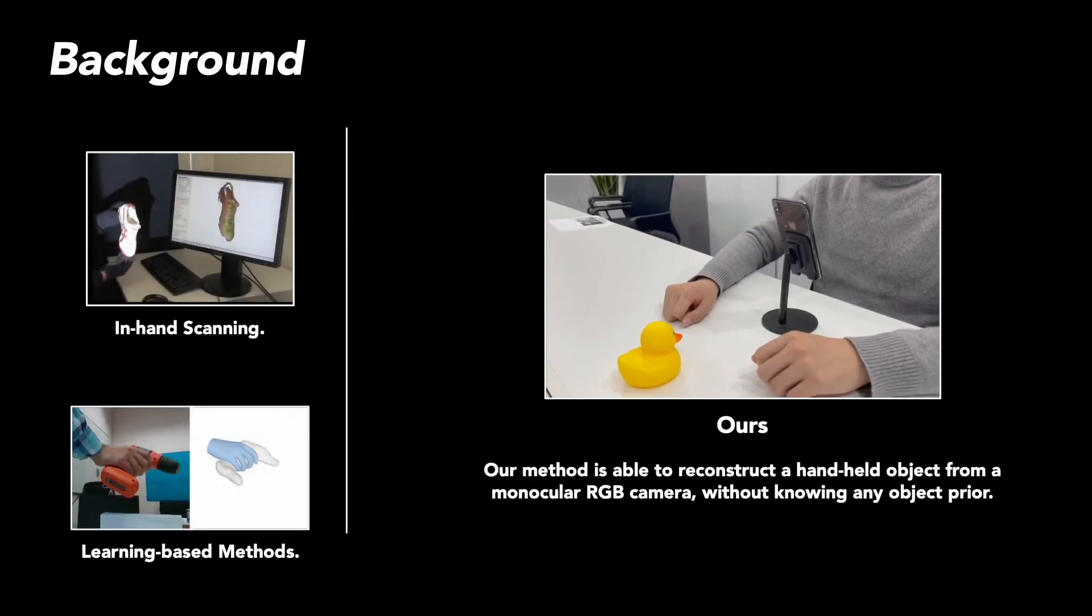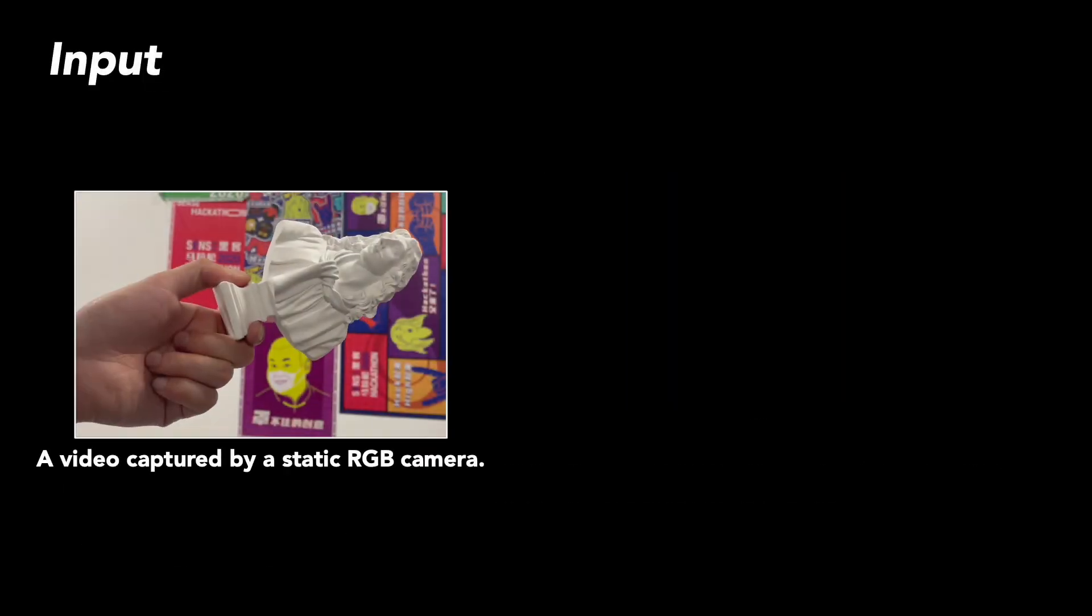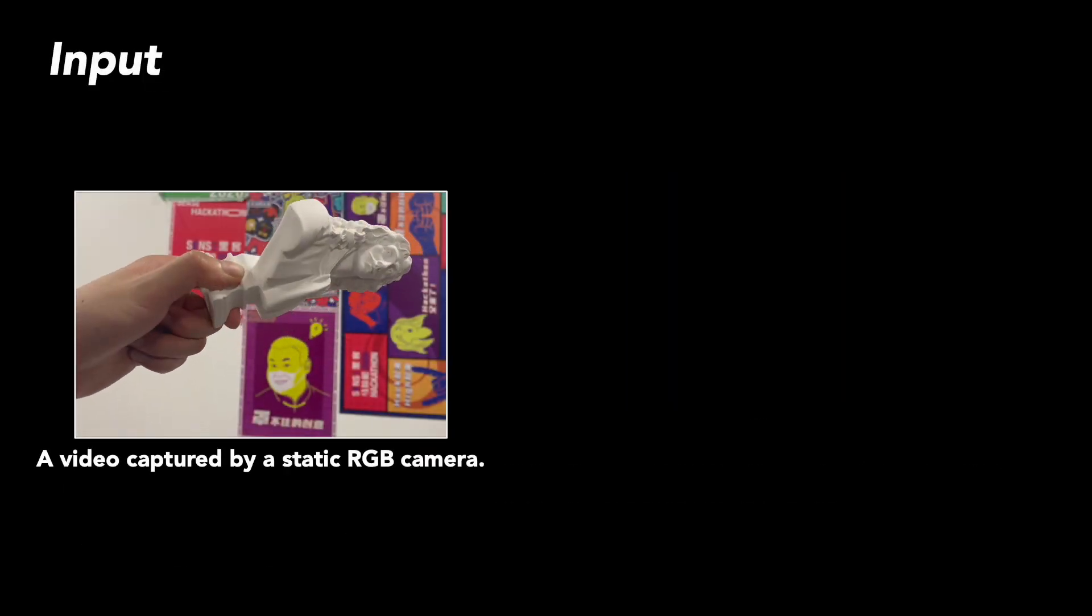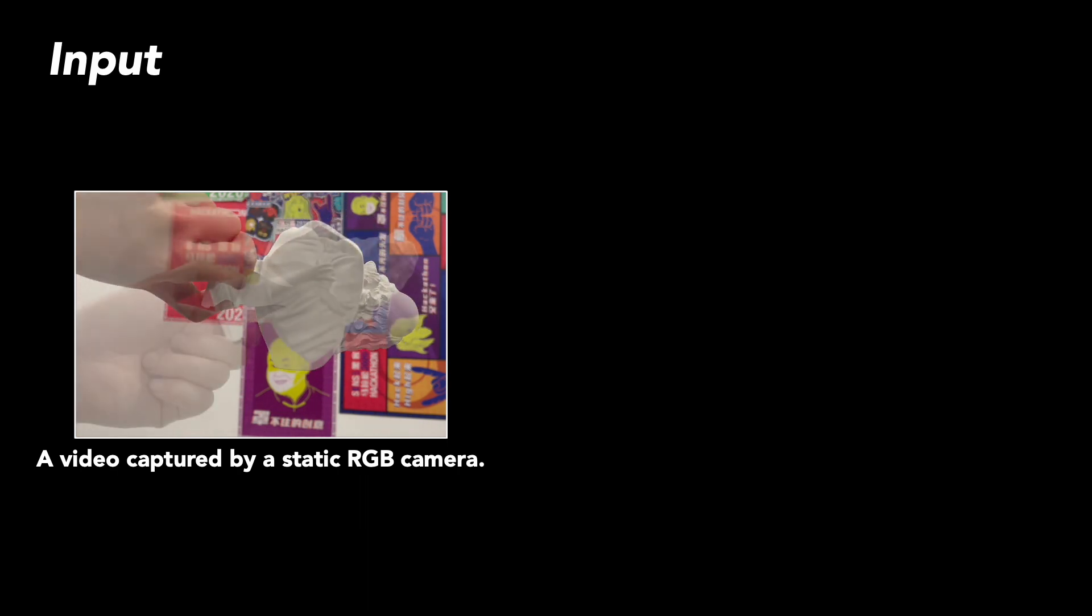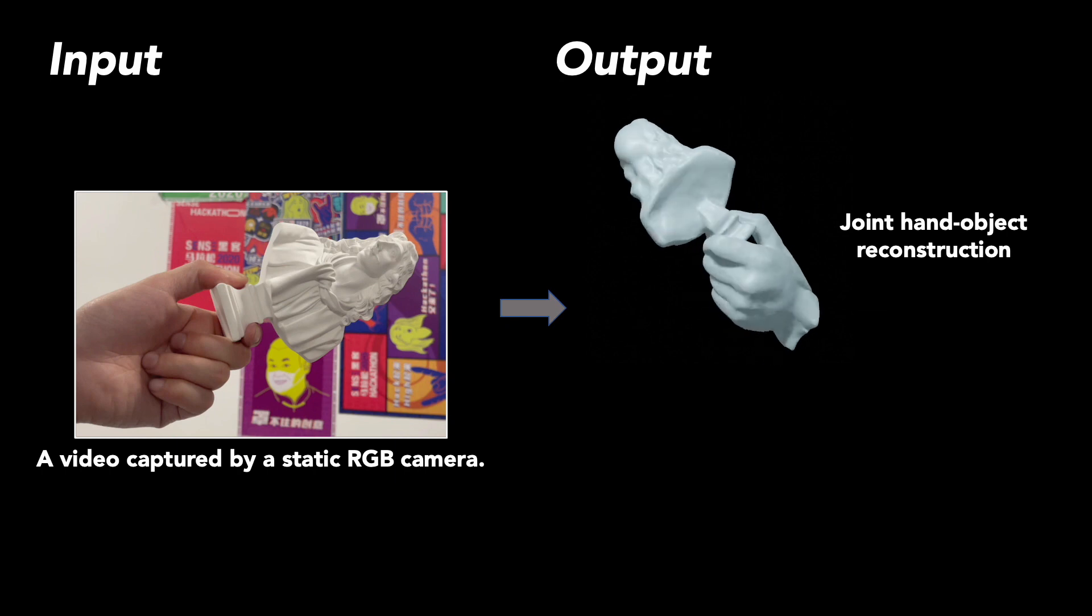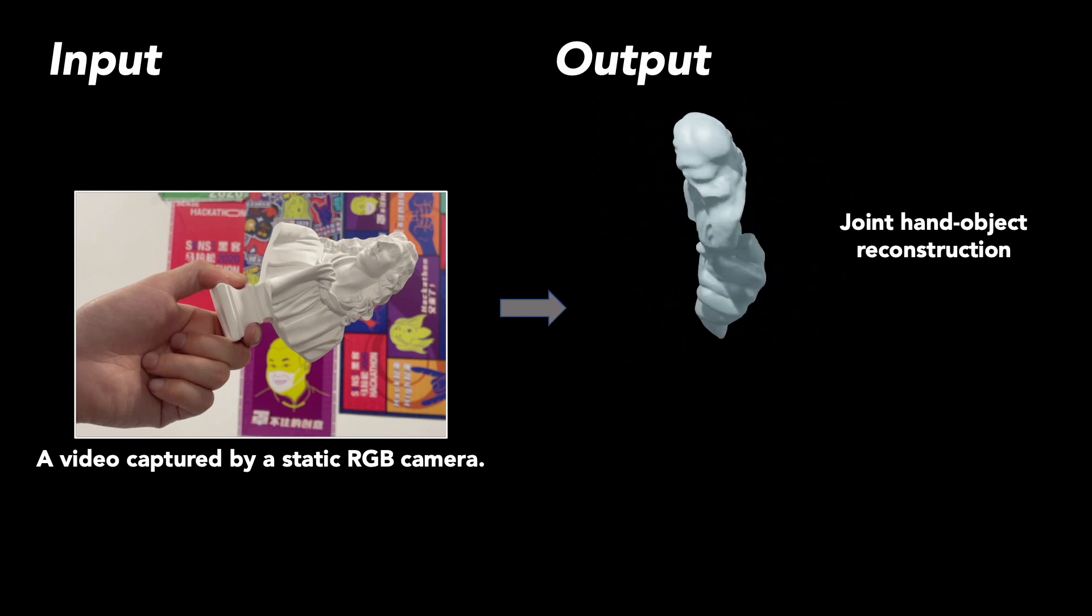Our method is able to reconstruct a handheld object from a monocular RGB camera without knowing any object prior. The input of our setting is a video captured by a static RGB camera. The output is the joint hand object reconstruction and separated object.